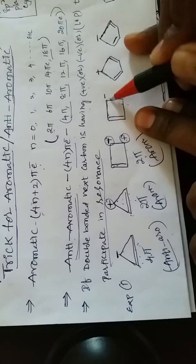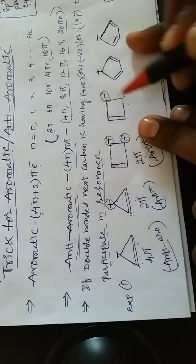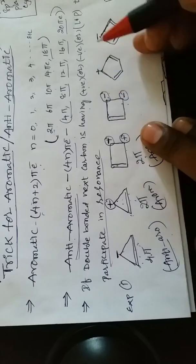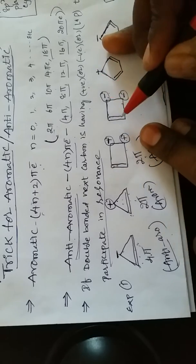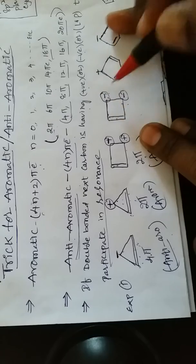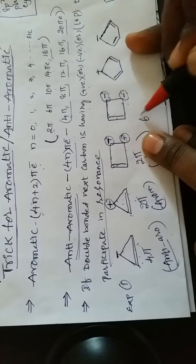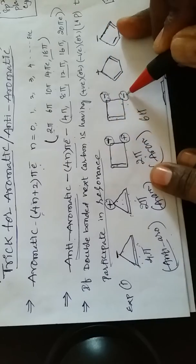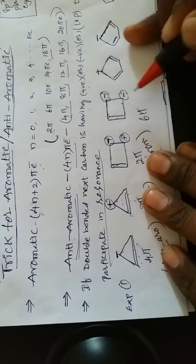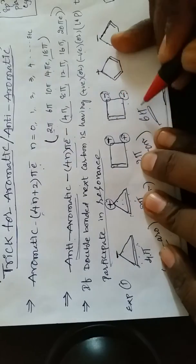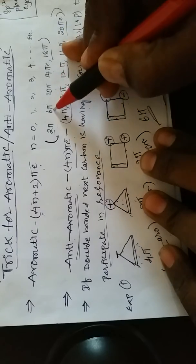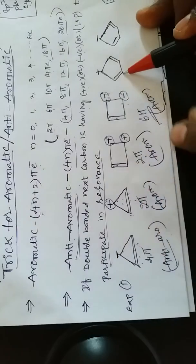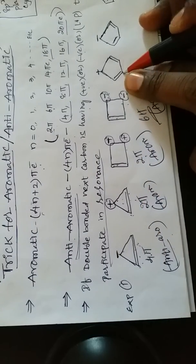Fourth example: a double-bonded carbon, then the next carbon has a negative charge participating in resonance, and another double bond whose next carbon also has a negative charge. Two pi electrons from the double bond, plus two from each negative charge — total six pi electrons. Six pi electrons belongs to aromatic.